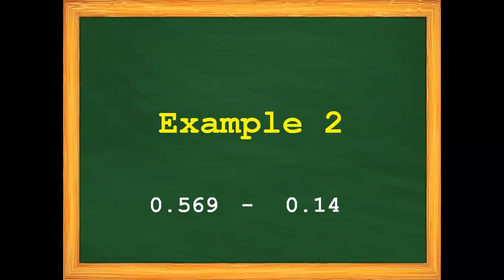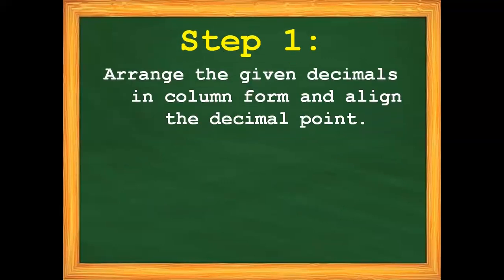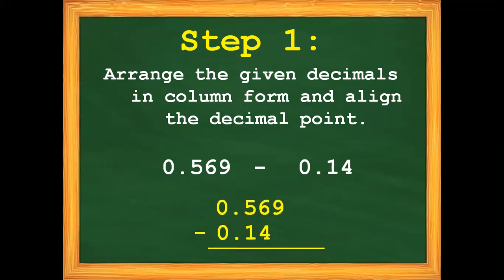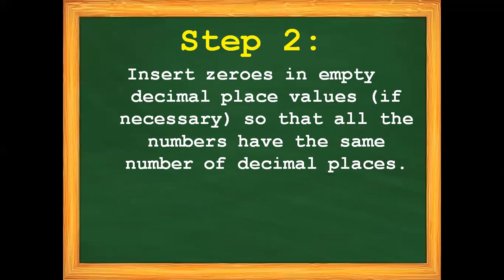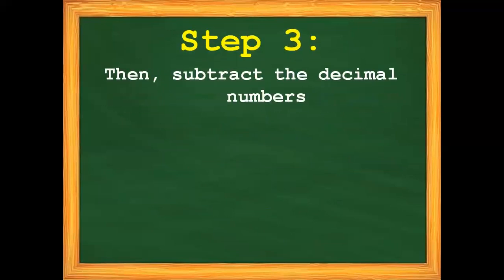Let's proceed to example number 2: 569 thousandths minus 14 hundredths. Step number 1: arrange the given decimals in column form and align the decimal point. Let's change this into a column form. Now, let's proceed to step number 2: insert zeros in empty decimal place values if necessary so that all the numbers have the same number of decimal places.